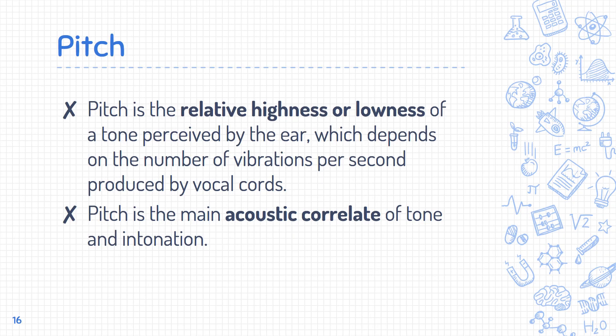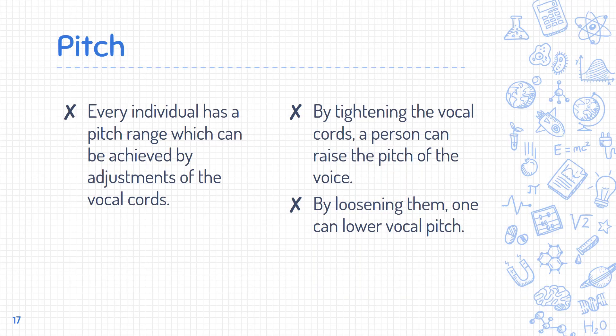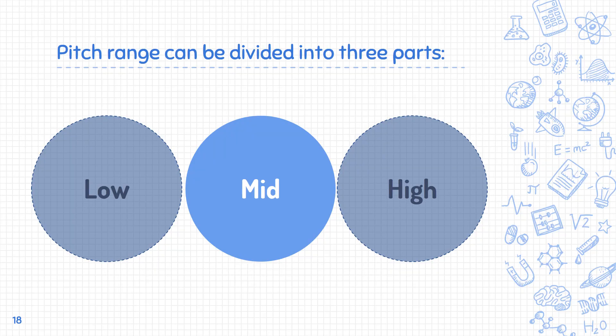Pitch is the relative highness or lowness of a tone perceived by the ear, which depends on the number of vibrations per second produced by the vocal cords. Pitch is the main acoustic correlate of tone and intonation. Every individual has a pitch range, achieved by adjustment of the vocal cords — tightening raises pitch, loosening lowers it. Pitch range can be divided into three parts: low, mid, and high.